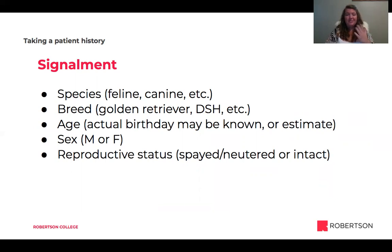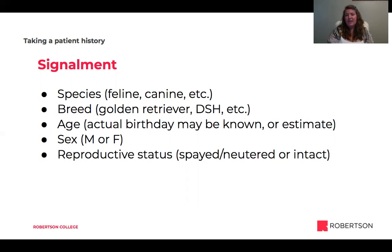If they don't know their breed, cats tend to be either domestic short hair or domestic long hair. We also need to know the pet's age — it might not be possible to know for sure. Some people know the pet's birthday; if they bought from a breeder, but lots of pets are adopted through shelters so there might just be an estimate. We also want to know the patient's sex, and their reproductive status — are they spayed or neutered or intact?